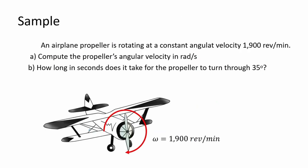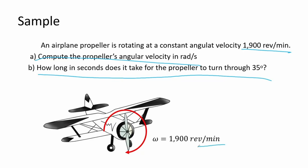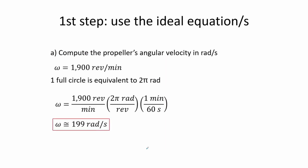Here we have an airplane propeller rotating at a constant angular velocity of 1900 revolutions per minute. For letter A, we compute the propeller's angular velocity in radians per second. For letter B, we find how long it takes for the propeller to turn through 35 degrees. First, we convert the angular velocity from revolutions per minute to radians per second by multiplying by 2 pi over 1 revolution and by 1 minute over 60 seconds, obtaining approximately 200 radians per second.